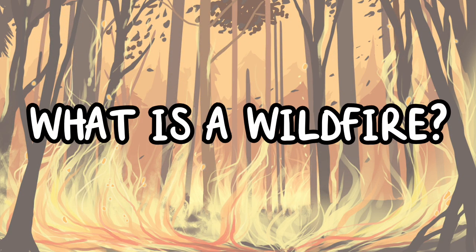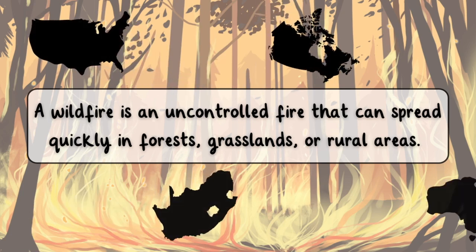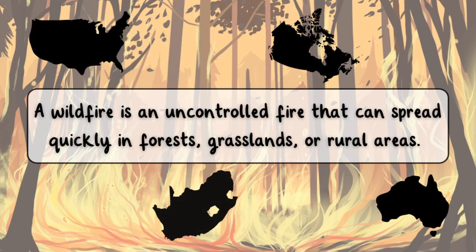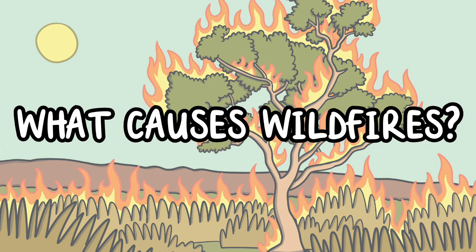What is a wildfire? A wildfire is an uncontrolled fire that can spread quickly in forests, grasslands, or rural areas. They can happen almost anywhere but are most common in places like the United States, Canada, South Africa, and Australia. Wildfires are more likely during summer, fall, and droughts, when leaves and branches are dry and flammable.